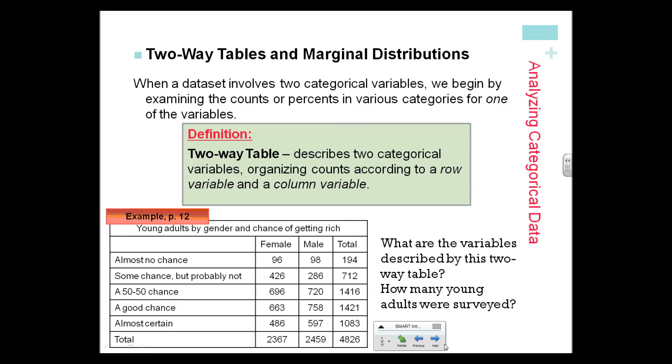And the second variable is answering the question: What do you think are the chances you will have much more than a middle-class income at the age of 30? Those are the two actual variables—the chance and the gender. The values of the variables are going along, and the numbers to the right.